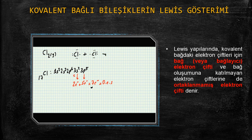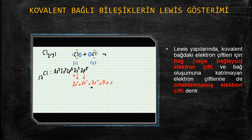2 klor atomuna da. 1 ve 2 diyelim. 1 numaralı klorun en dış tabakasındaki elektron ile 2 numaralı klorun en dış tabakasındaki bir elektron ortaklaşa kullanılacak. Çünkü kovalent bağ ametal atomları arasında gerçekleşir ve elektronlar ortaklaşa kullanılır. İyonik bağdaki gibi elektron aktarımı söz konusu değil.